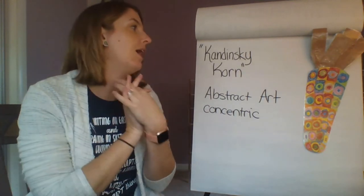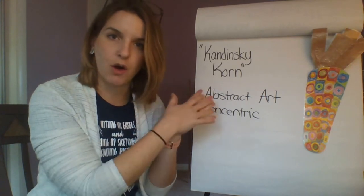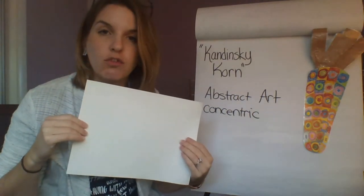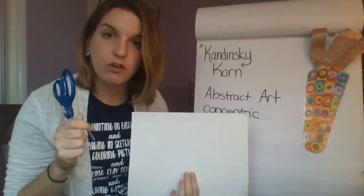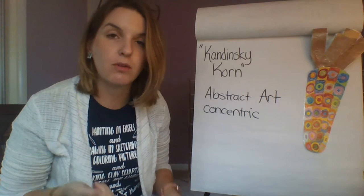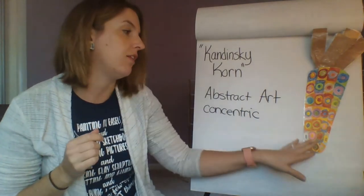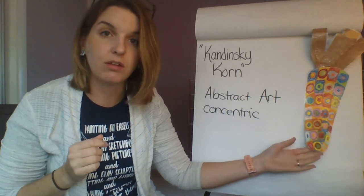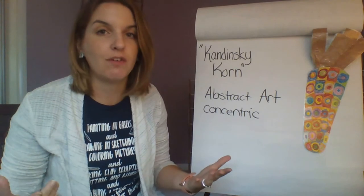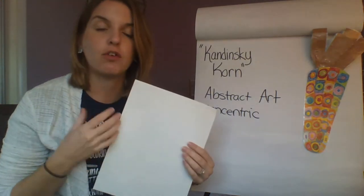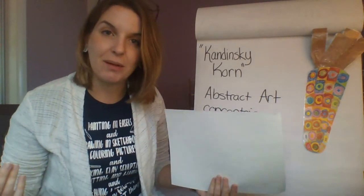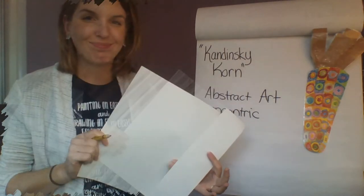So we're going to take these two things — Indian Corn with all its different color kernels and Kandinsky's concentric circles — and combine them into what I like to call Kandinsky Korn. You'll need a piece of paper, a pencil to draw with, scissors to cut out your corn shape, and something to color your circles with. I'm going to use crayon, but you could use markers, colored pencils, oil pastels, or even paint if you have thick paper.